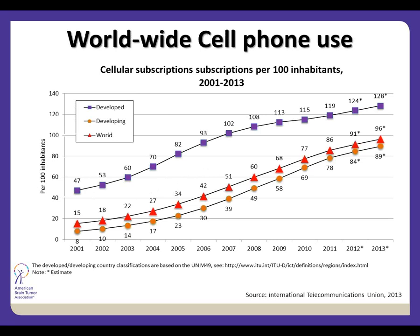Cell phones have gained the most attention in terms of potential association with brain tumors, and I understand why — most of us hold the cell phone right next to our head, predominantly on one side. Many of these studies have looked at handedness and which side of the head people hold the phone to, because exposure depends on where the phone is positioned on your head.